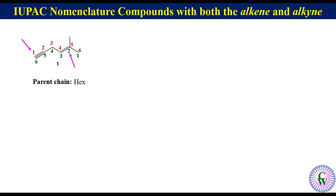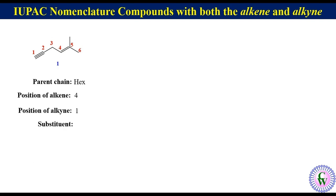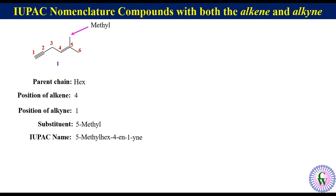So left to right numbering will be the correct numbering. The position of alkene is 4 and the position of alkyne is 1. There is a methyl group at C5, so it will be written as 5-methyl. Thus the IUPAC name of this molecule will be 5-methyl-hex-4-ene-1-yne.